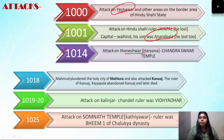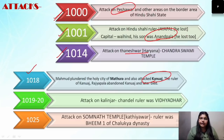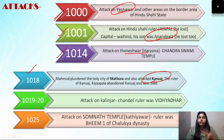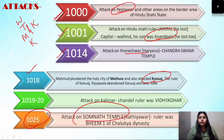In 1014 AD, they attacked Thaneshwar. The chronology of their attacks is important for exam questions. So: first was the battle of Vahind in 1001 AD, then 1014 AD Thaneshwar, then Mathura and Kannauj, then Kalenjar attacked in 1019–1020 AD, and 1025 AD you have to remember — that's when the Somnath temple raid happened, ruled by the Chalukya dynasty.